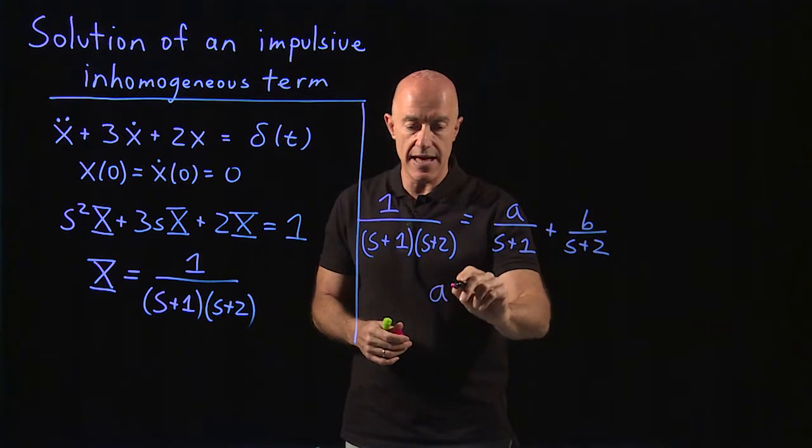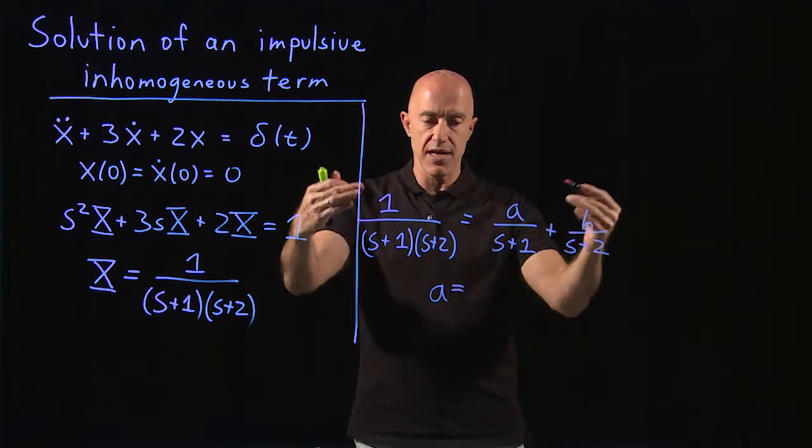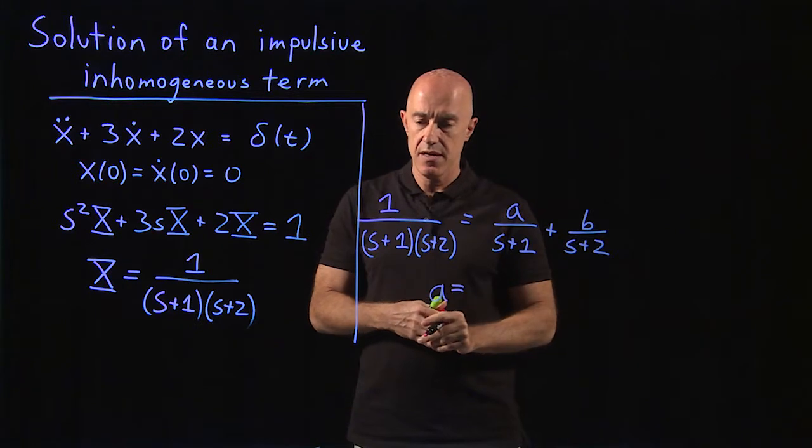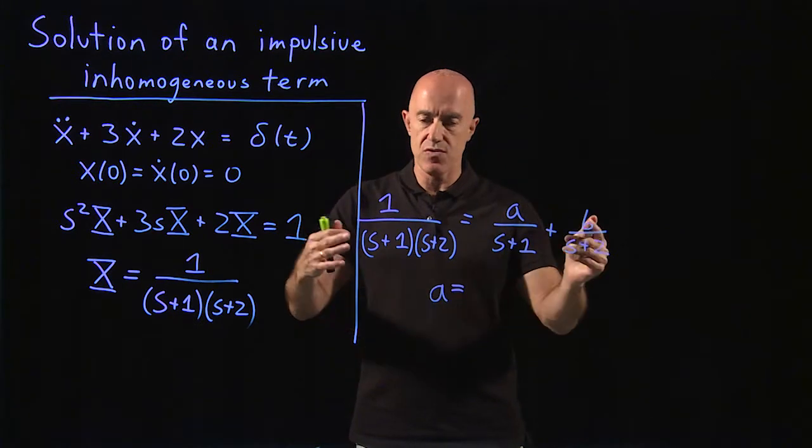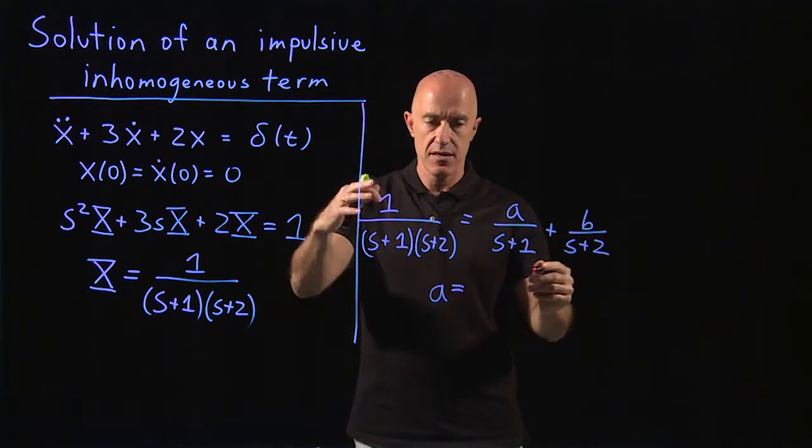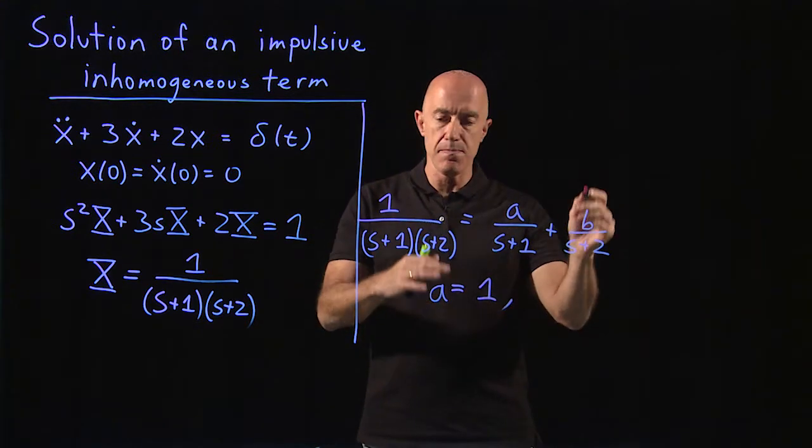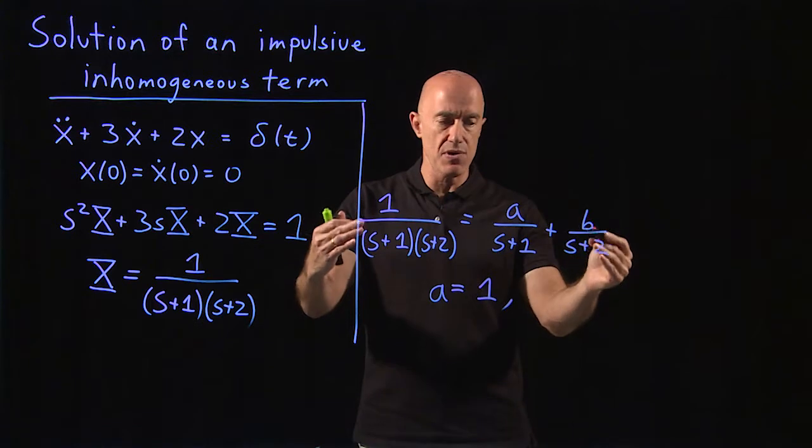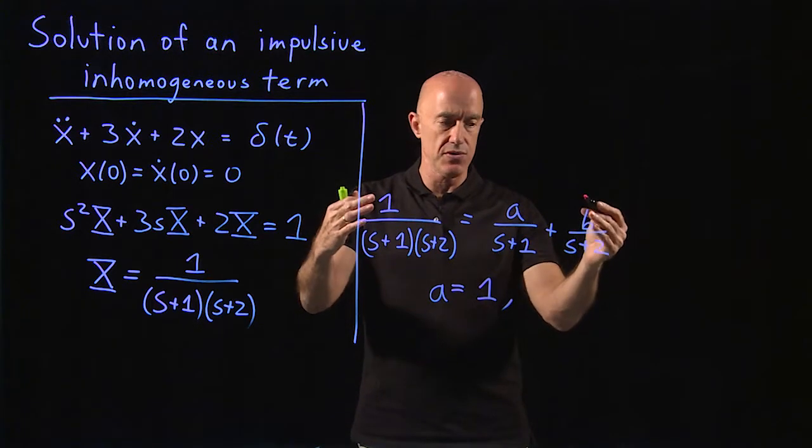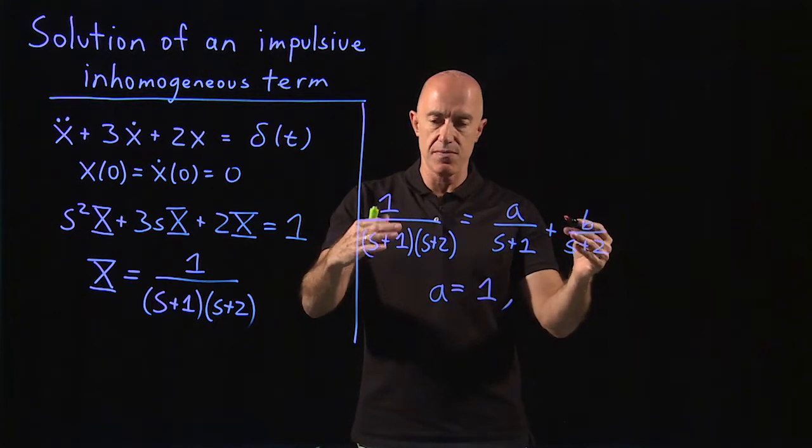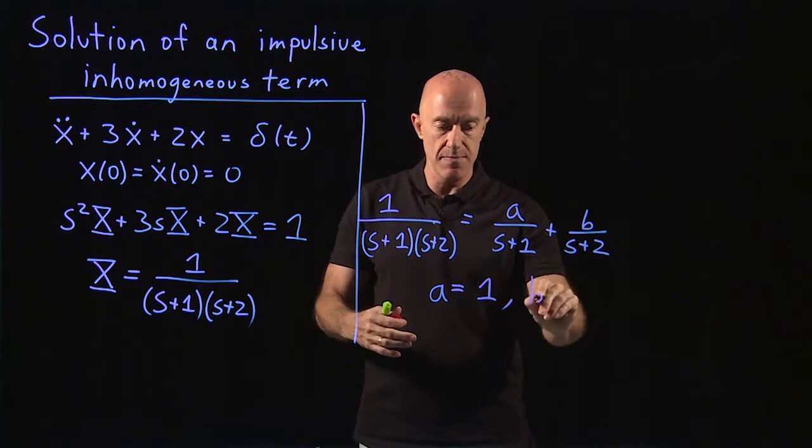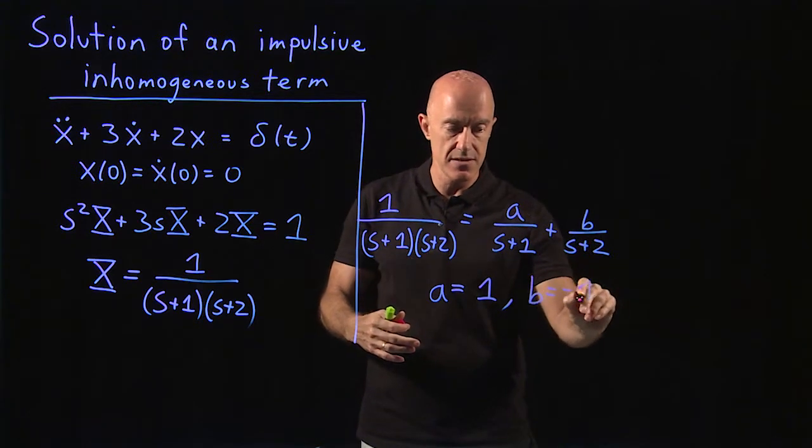So to determine a, we multiply both sides by s plus 1, and we set s equal to minus 1. So we get a equal to 1. To determine b, we multiply both sides by s plus 2, and set s equal to minus 2. So that b is equal to minus 1.